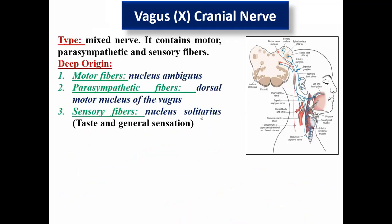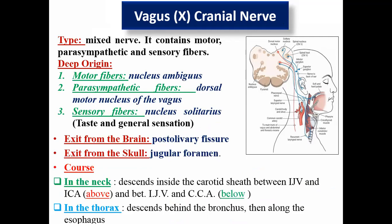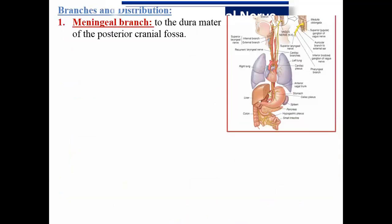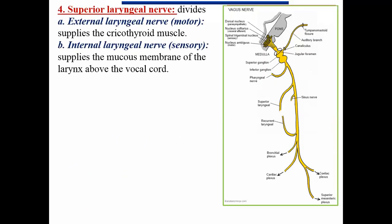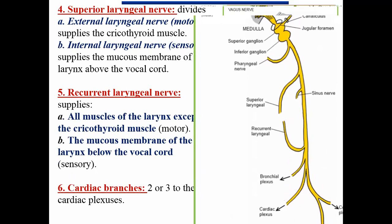Summary of the vagus: mixed nerve, motor from nucleus ambiguus, parasympathetic from dorsal motor nucleus of vagus, sensory from nucleus solitarius. Exits from post-olivary fissure, through jugular foramen with CN 9 and 11. Descends in the neck between vein and artery, giving the recurrent laryngeal — which loops below the arch of aorta. Branches include: meningeal, auricular, pharyngeal (all pharynx muscles except one), palatine (all palate muscles except tensor palati), superior laryngeal (internal and external), recurrent laryngeal, and cardiac branch.